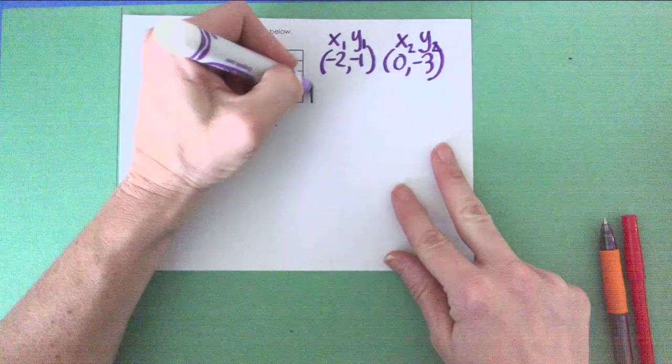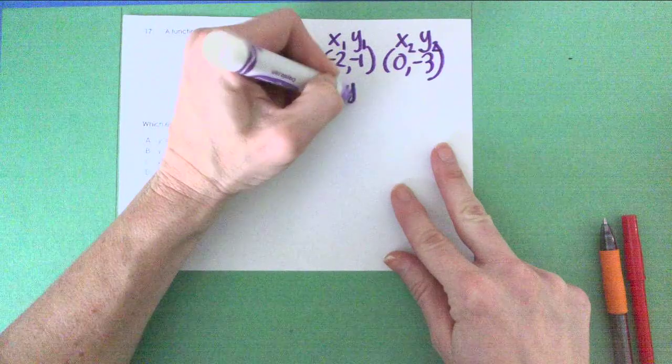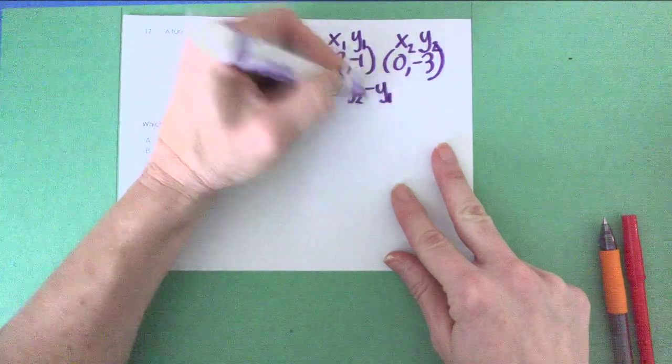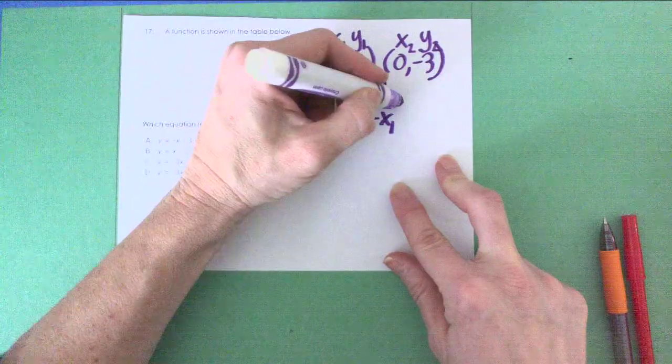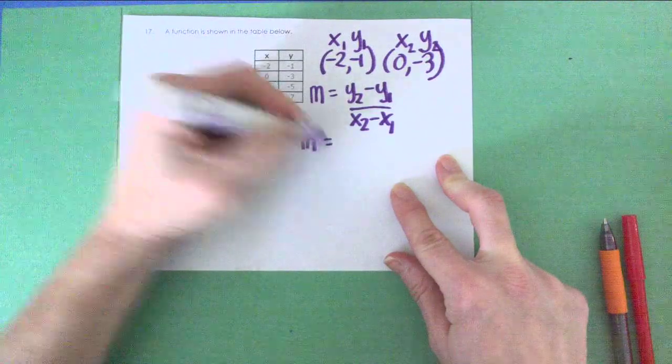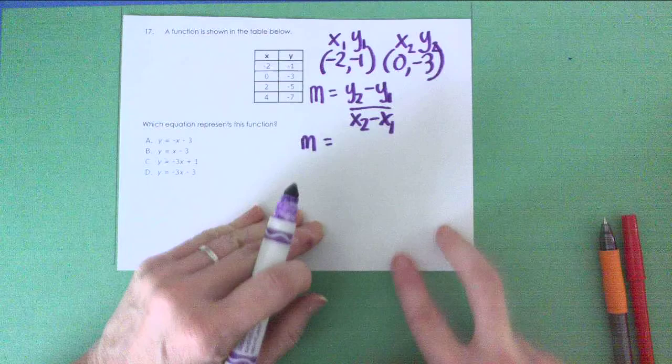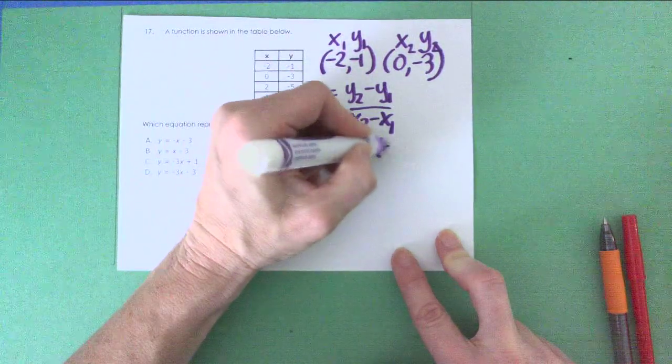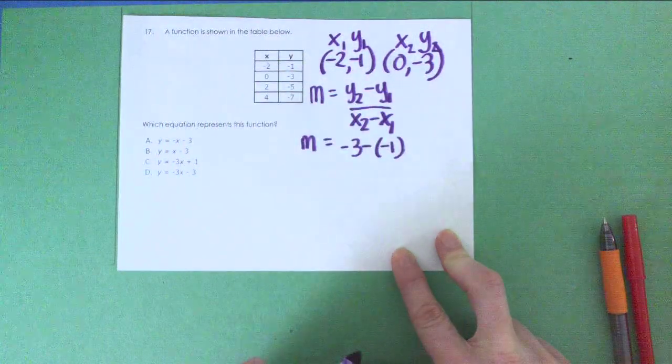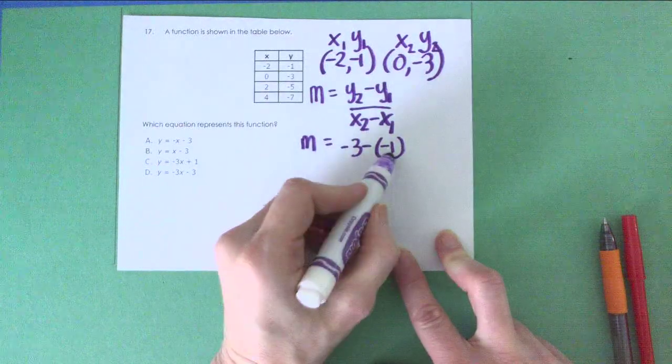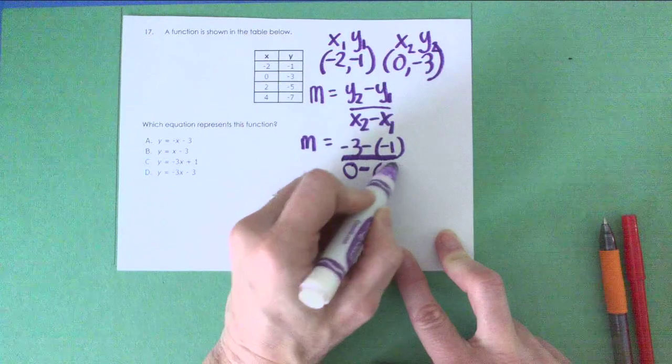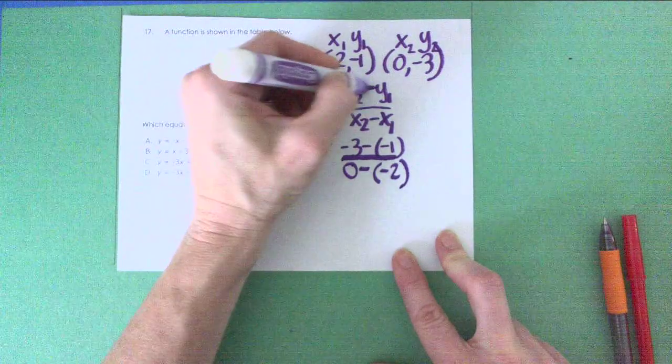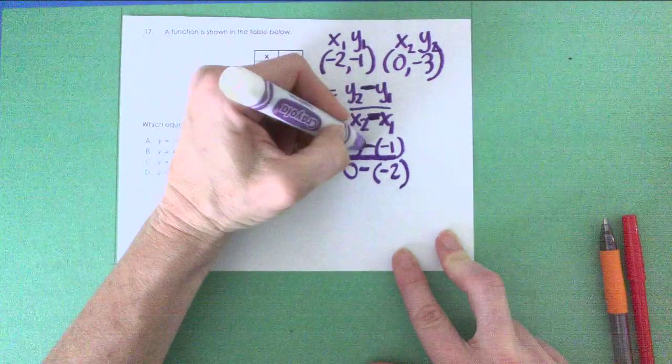So knowing that slope is y sub 2 minus y sub 1 over x sub 2 minus x sub 1, I can fill in my values. And that's going to give me negative 3 minus, careful here, negative 1. That's a double negative. Negative 3 minus negative 1 over 0 minus negative 2. So you have these minuses in the formula. They go with these minuses. But then these values just happen to also be negative. So be careful of the double negative.